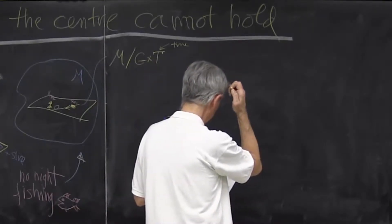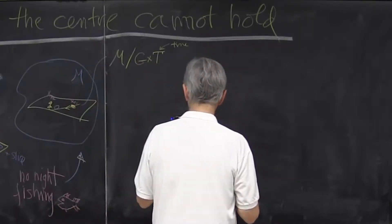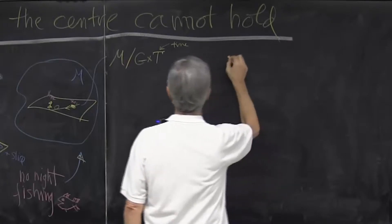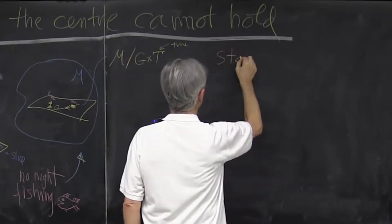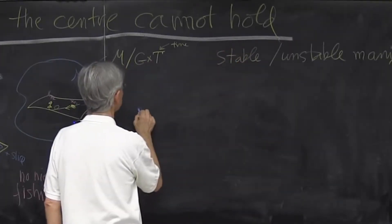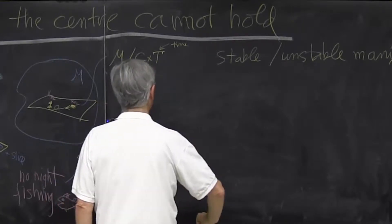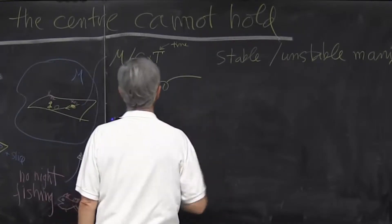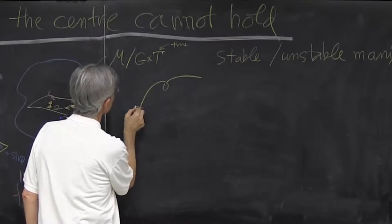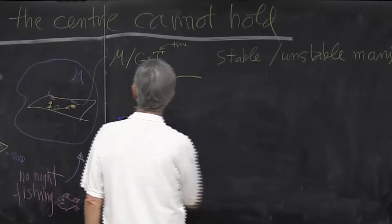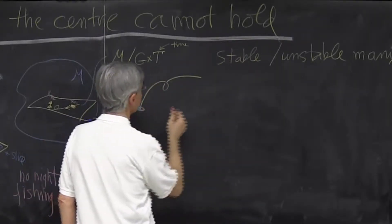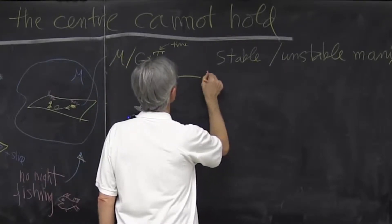The key bridge between local and global stuff is a stable and unstable manifold. If I draw a picture, what I have in mind is that if I have a trajectory and I start in its neighborhood, what will happen in finite time